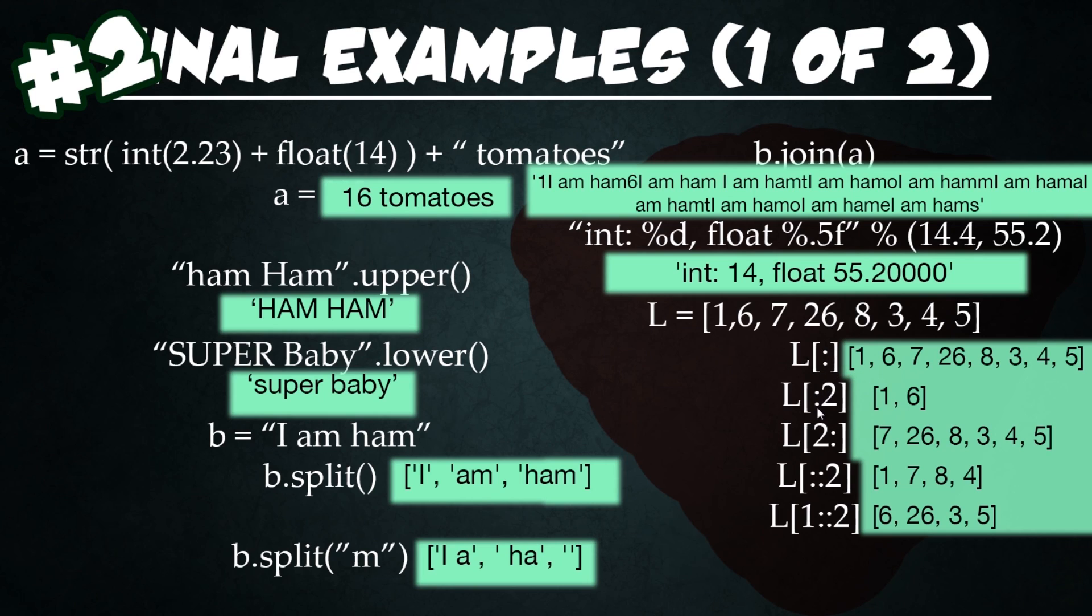Next we have a colon two. This is saying output everything until an index of two, which would be the third element in the list. So it's going to output the very first and the very second. Then we're saying two colon, and that's going to say starting with the third element of the list or the index of two, we're going to output everything into a new list.